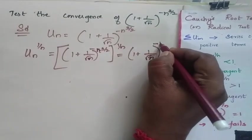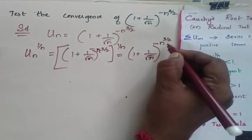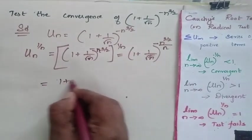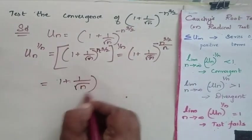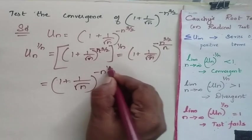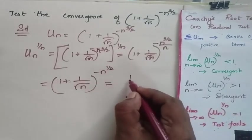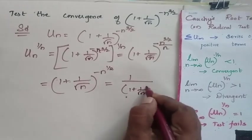So this is equal to (1 + 1/√n)^(-n^(1/2)). So this I can write as 1/(1 + 1/√n)^(√n).